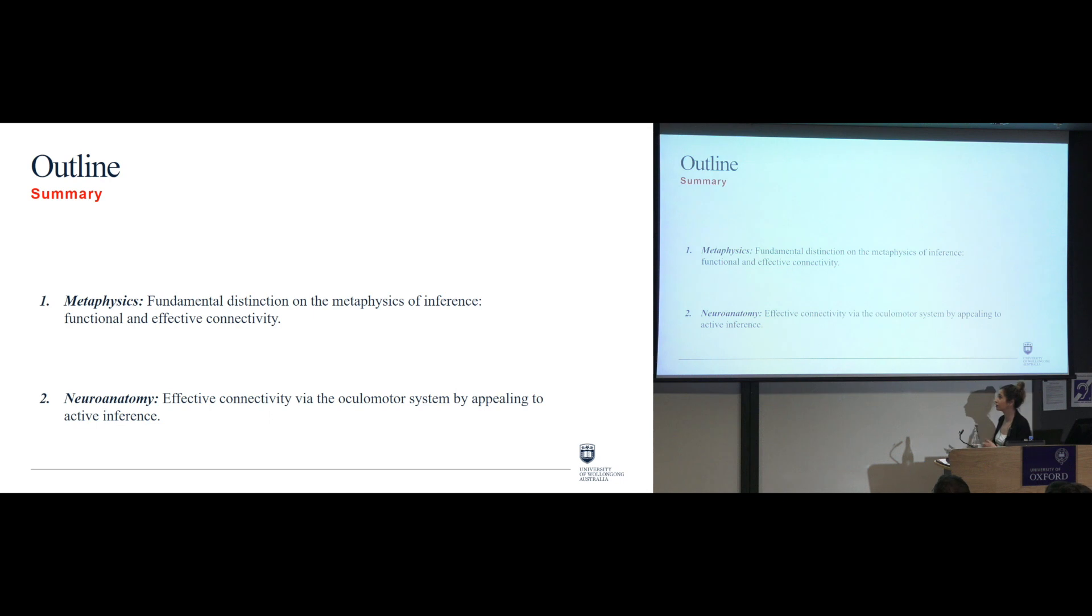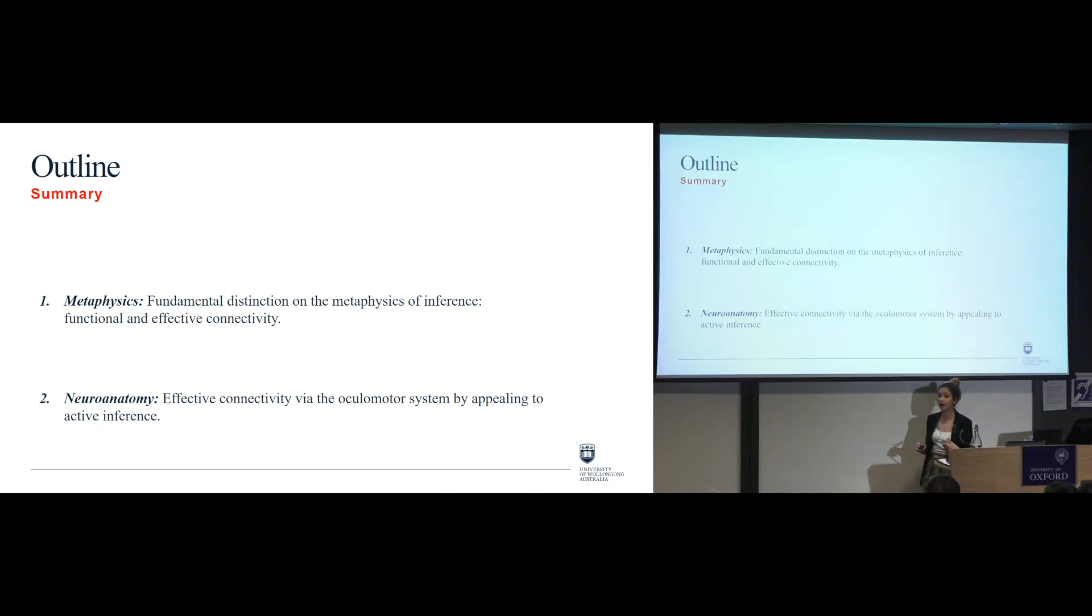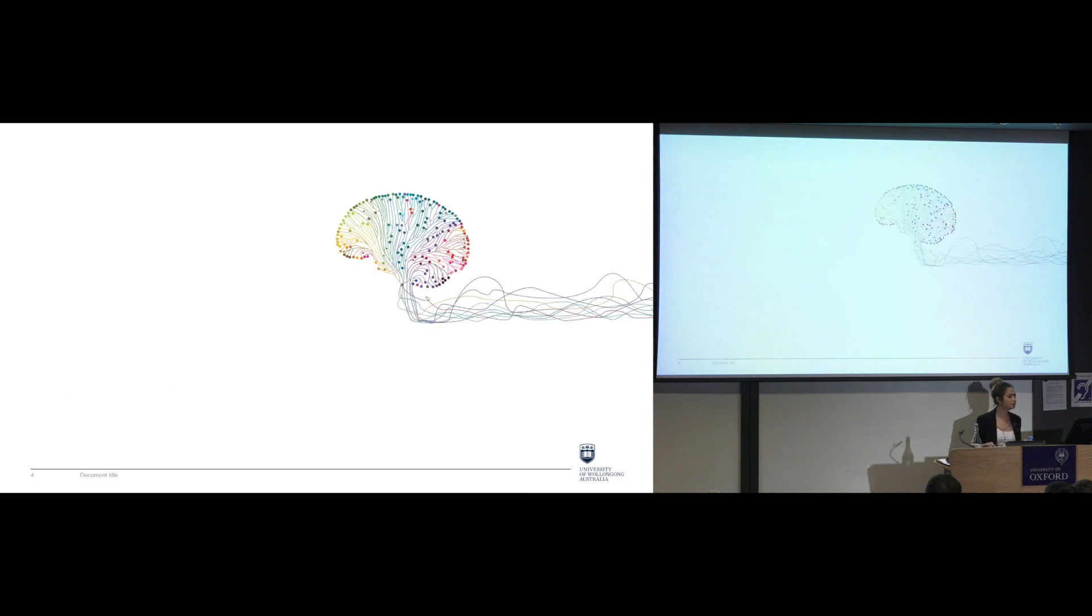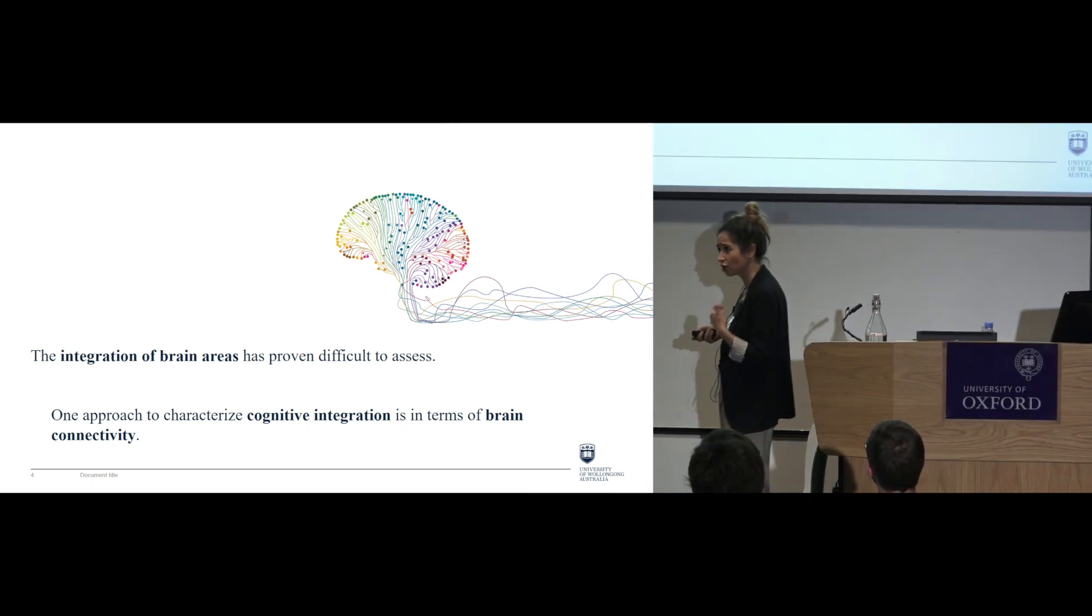Okay, so the presentation will be divided in two parts, one metaphysical, the other one is neuroanatomy. So first what I'm going to do is I'm going to look at the fundamental distinction between the metaphysics of inference between functional and effective connectivity. This will then allow me to focus on effective connectivity and I want to look at particularly on the oculomotor system as sort of a study case and I'm going to look at that from the active inference point of view. Okay, so we all know from the last three days at least that the integration of the brain areas is something that is quite difficult to assess and one way to do that is by looking to in terms of the brain connectivity and how cognition integrates from that point of view, which is what motivates me to look at the metaphysics of the connectivity.